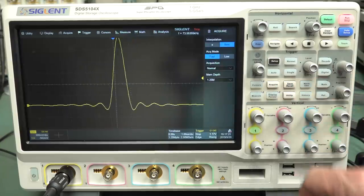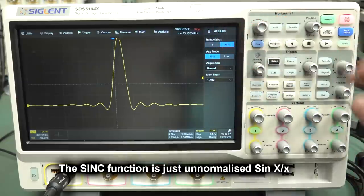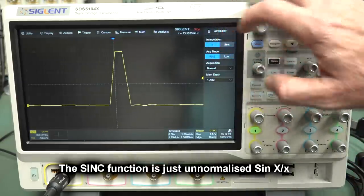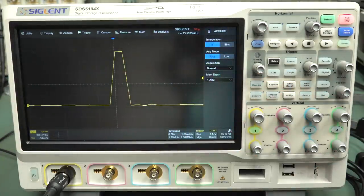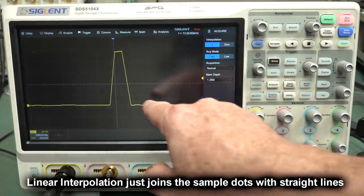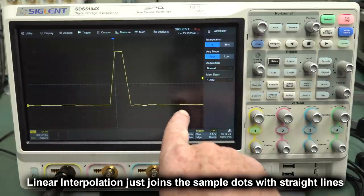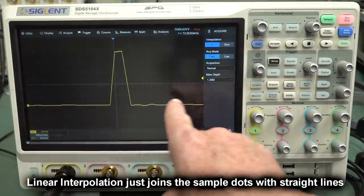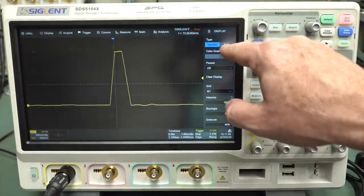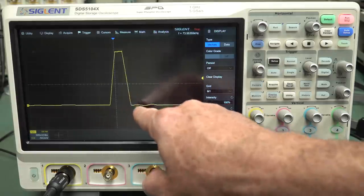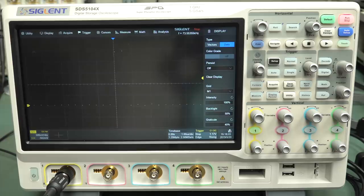If we go in and go to the acquire menu like this, sinc or sinx here, this is the interpolation. If we actually turn that off, we can see that this is what it uses using what's called linear interpolation, where it actually joins the samples like this. Because in this particular case, we're not going to have, because we're zoomed in, we're not going to have many sample points on this screen here.